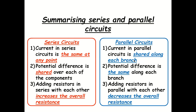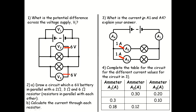In summary, here are the points to memorize. Series circuit: current remains the same at any point, but potential difference is shared. To find total resistance, simply add up all the resistance values — total resistance increases as you add more resistors. Parallel circuit: current is shared, potential difference remains the same, and overall resistance decreases as you add more resistors.